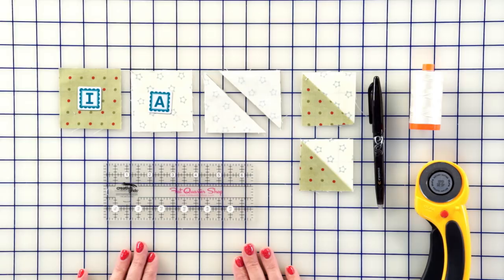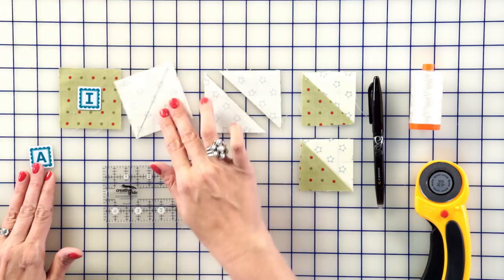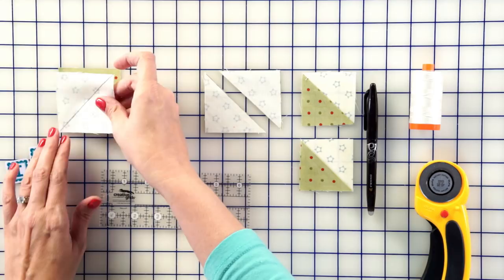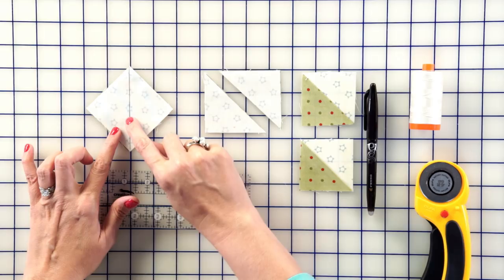Your first step in the Peppermint Bark is to make half square triangle units. You're going to take your fabric A square and draw a line from corner to corner with a friction pen. I used a friction pen since it will disappear with heat later. Place this square on top of your fabric I square. Then you're going to stitch a quarter inch away from your drawn line.